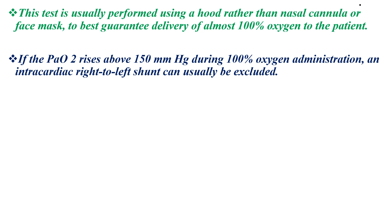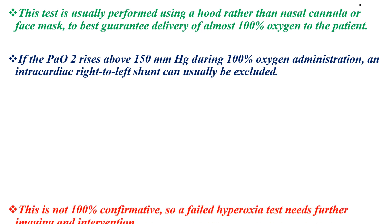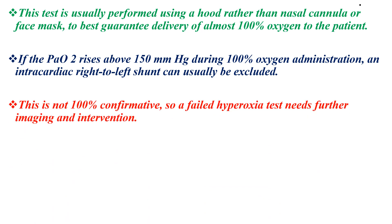If the partial pressure of oxygen rises above 150 mmHg during 100% oxygen administration, an intracardiac right-to-left shunt can usually be excluded. However, this is not 100% confirmative. A failed hyperoxia test — where the partial pressure of oxygen does not rise above 150 mmHg — requires further imaging and intervention.